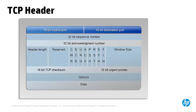Buffers in TCP allow for more efficient transfer of large files, but large buffers can negatively affect real-time applications which require data to be transmitted as quickly as possible. The PUSH flag allows the application to push data out immediately rather than waiting for additional data to enter a TCP buffer. It causes TCP on the transmitting device to send the data immediately, and on the receiving device to push the data to the receiving application immediately.